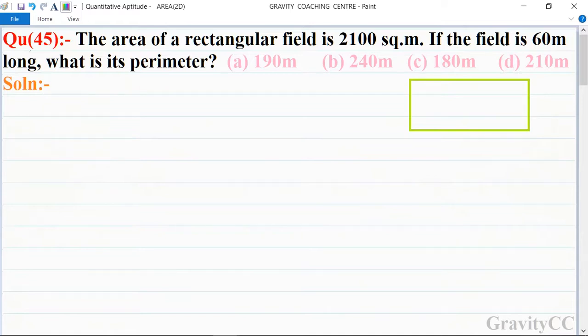Chapter area, question number 45. The area of a rectangular field is 2100 square meters. If the field is 60 meters long, what is its perimeter? In this question, given that the length of the field is 60 meters.